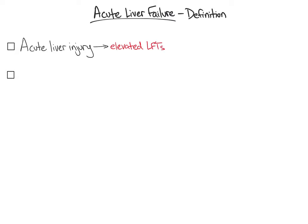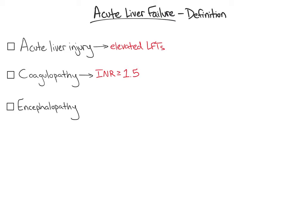Next, there must be evidence of coagulopathy, defined as an INR greater than or equal to 1.5. Next, the patient must be encephalopathic. The Westhaven criteria are utilized to grade hepatic encephalopathy, or HE, on a 1-4 scale.